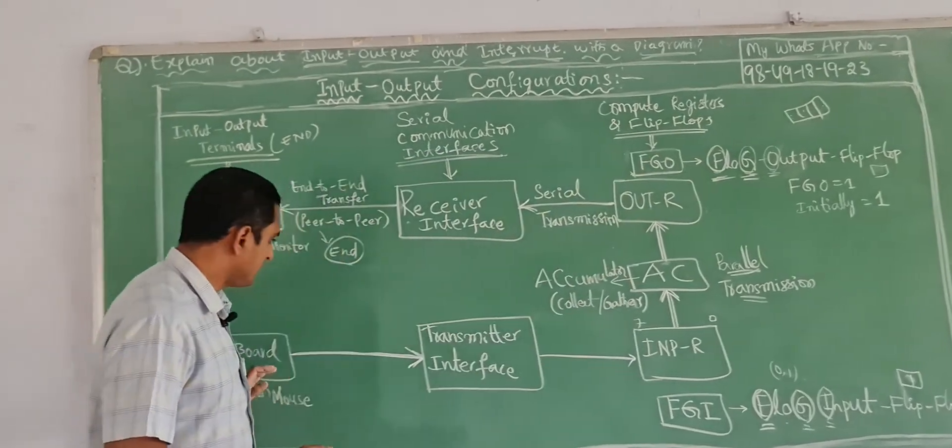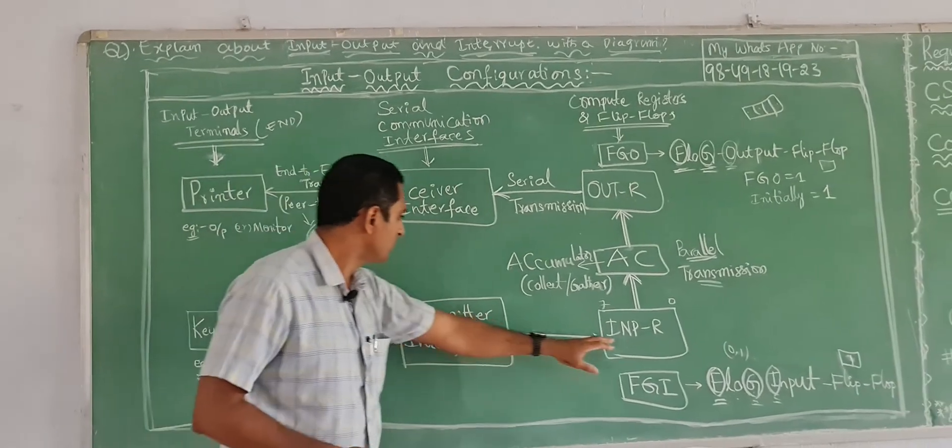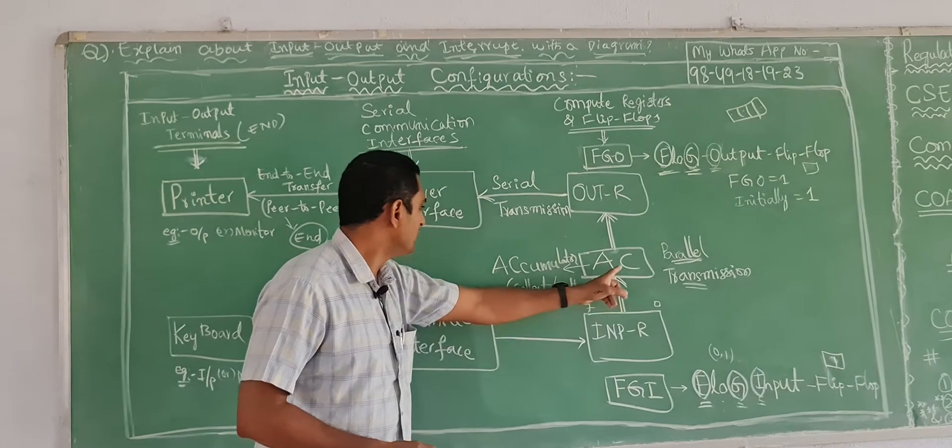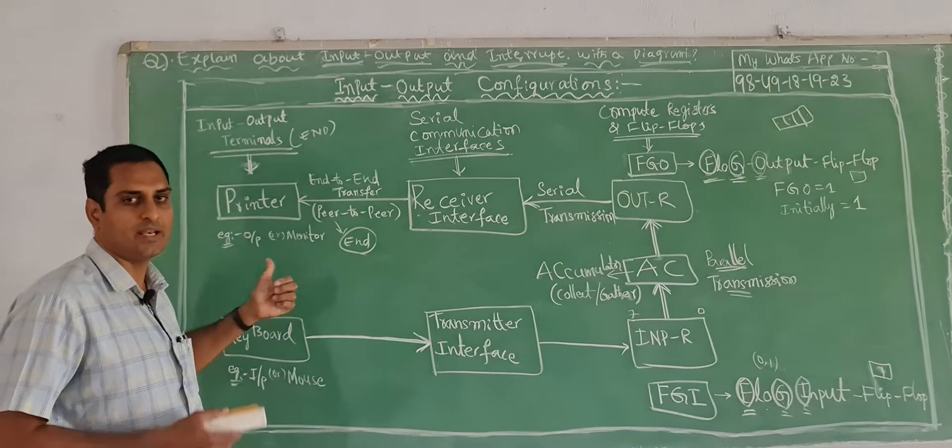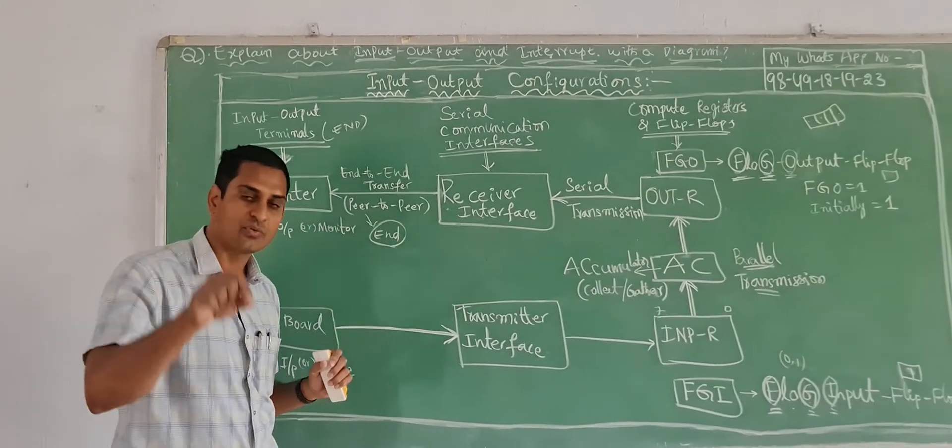So if you type any data to print this, it will transmit information to input register, it will store, FGI flip flop is 1, and it will send to accumulator, it will send to output register, receiver, and it will print. Very easy, draw the diagram neatly and practice in rough notes three times.